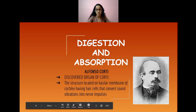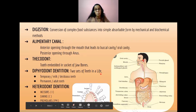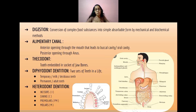Moving to the next point on the chapter Digestion: digestion is the conversion of complex food substances into simple absorbable forms by mechanical and biochemical methods. The alimentary canal is the passage through which food travels.